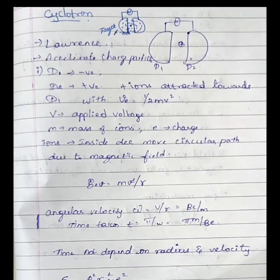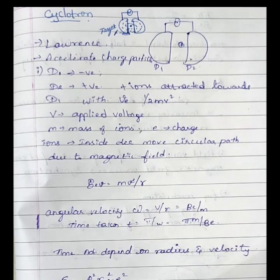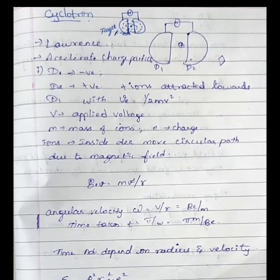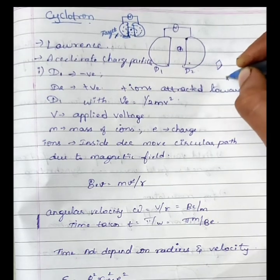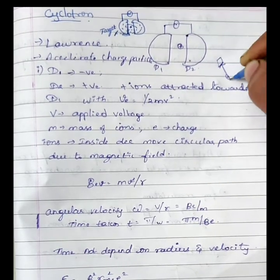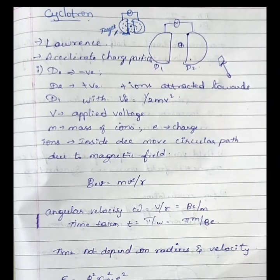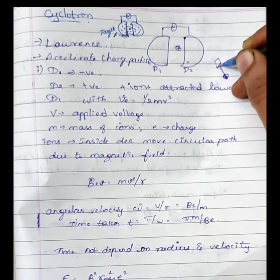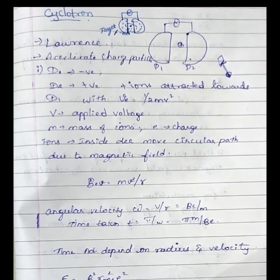Hello everyone. In this video, we will discuss cyclotron in nuclear physics. Where cyclotron is used, there is a target material. The materials are positive ions and neutrons used to hit it. We need an instrument to hit the targeted material. The instruments are cyclotron, synchrotron, and synchrocyclotron.